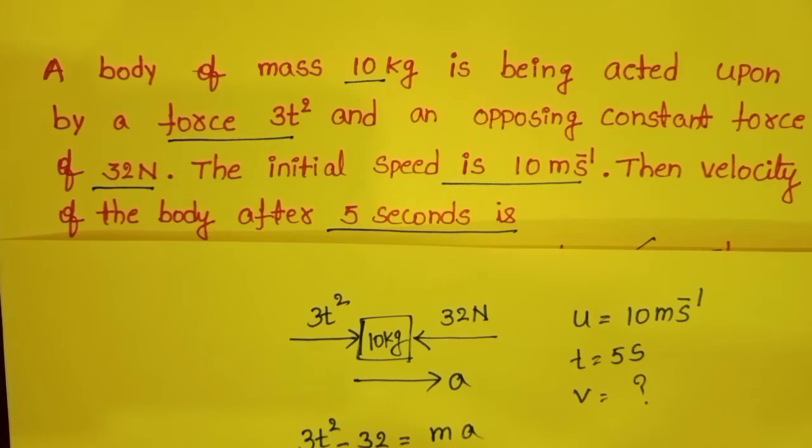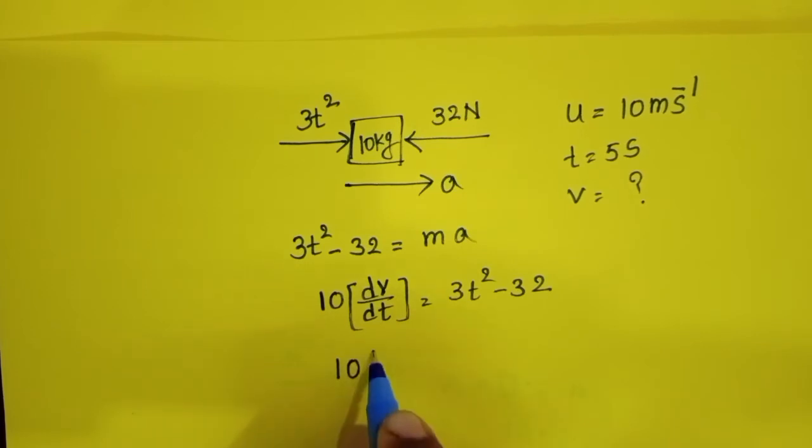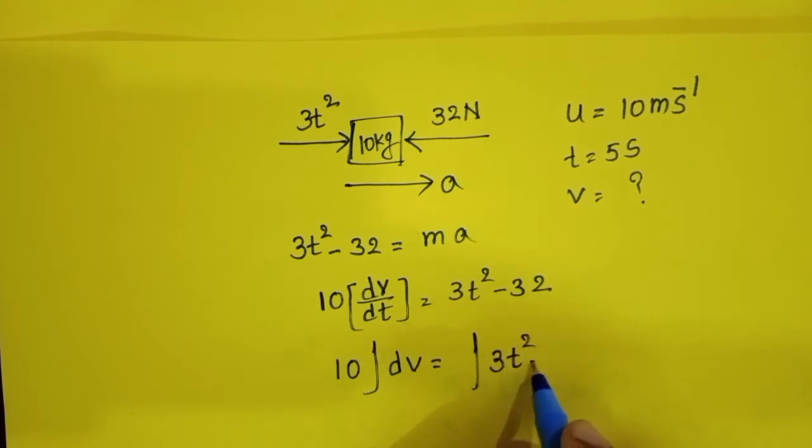To find out the final velocity, take integration on both sides. 10∫dv = ∫(3t² - 32)dt.